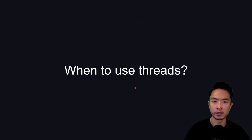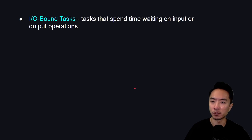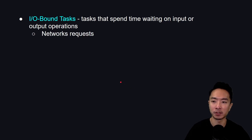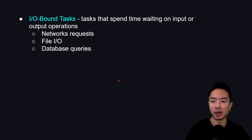So when do you use threads? Typically there are two types of applications where you want to speed up your program. The first is input-output tasks — this is when you have something you're waiting for, such as an input or output operation. This could be network requests, file input-output, or database queries.